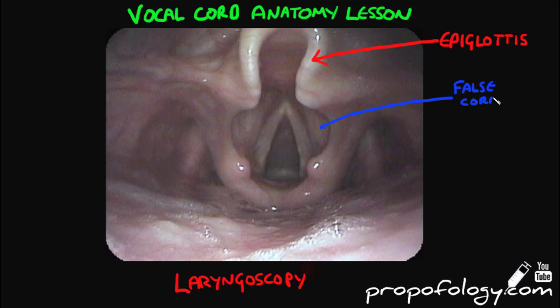The next arrow I'm drawing here shows the false cords, which sit more superior to the vocal cords. More inferiorly then are the true vocal cords.